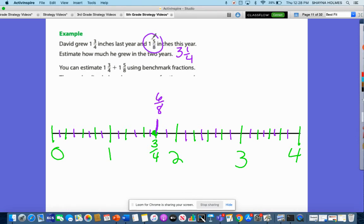So now I'm going to add my 1 and 5 eighths. So let's add the 5 eighths first. So this would be 1 eighth, 2, 3, 4, 5.